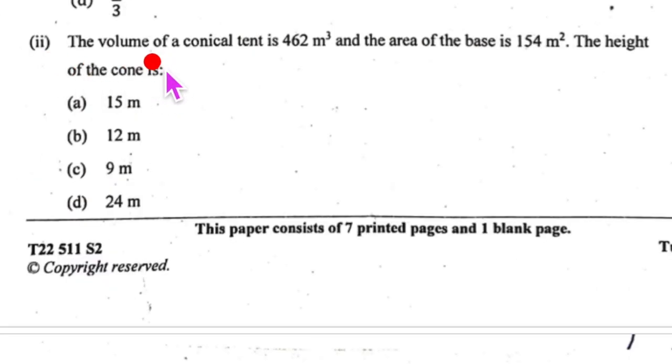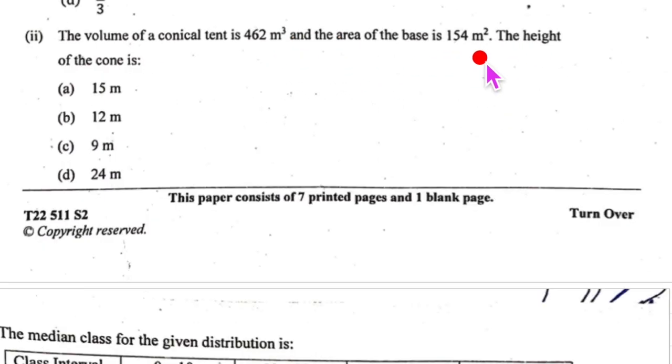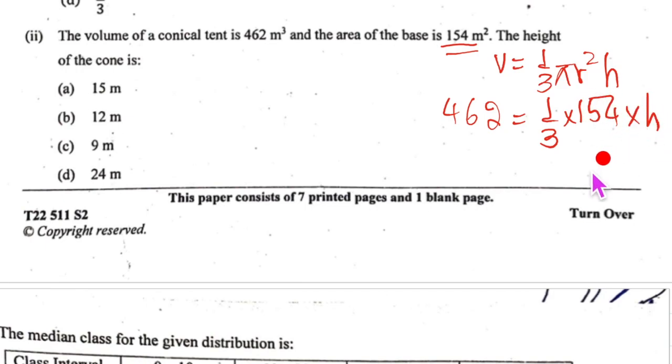The second part, the volume of the conical tent is 462 meter cube and the area of base is 154. For the working column, you will say that the volume is equal to 1 third pi r square h. Now volume 462 is equal to 1 third multiplied by pi r square is the area of the base. So don't substitute 22 upon 7 here. So 154 multiplied by h.